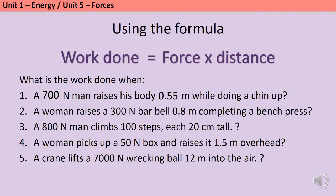The first thing that I'm going to do when I have any kind of physics equation is work out which numbers are which quantities. So here I can see that I have a 700 newton man, and I know that newtons are the units for forces, so that 700 is going to go where the word force goes, and the man is raising his body 0.55 meters doing a chin-up, and I know that meters are the units for distance, so that 0.55 goes where distance is, and then I can see from my equation I need to multiply those together. So 700 multiplied by 0.55 gives me an answer of 385 joules.